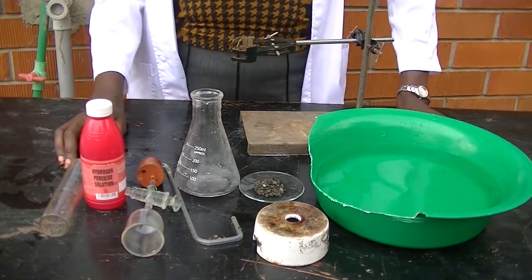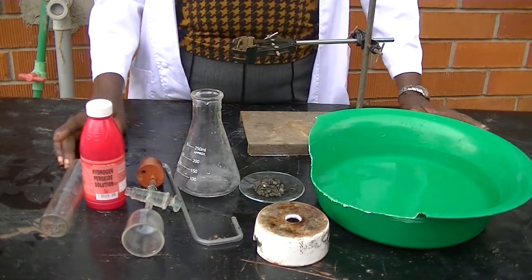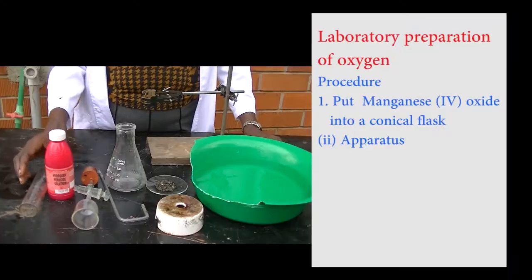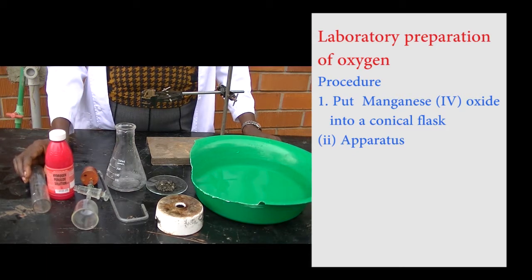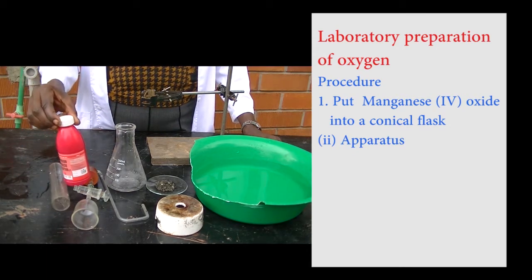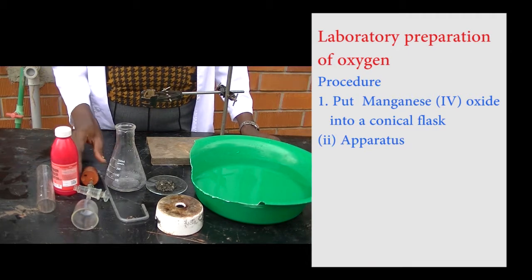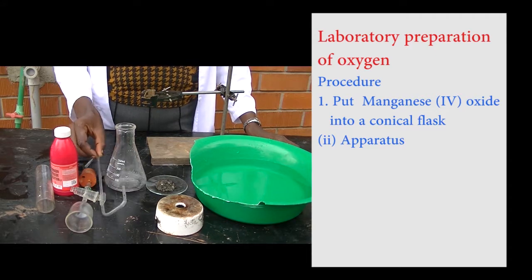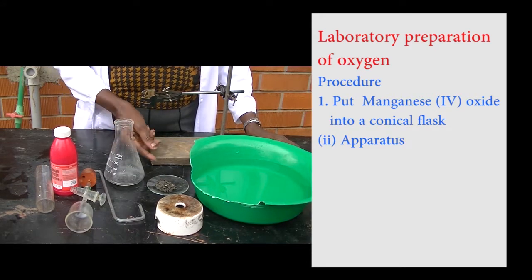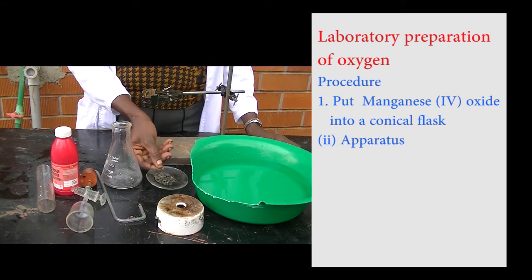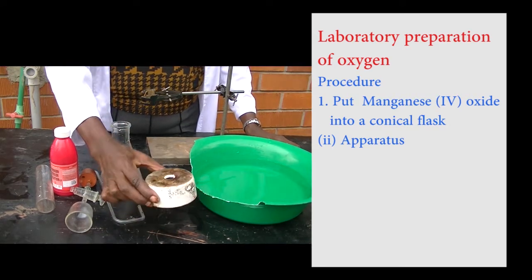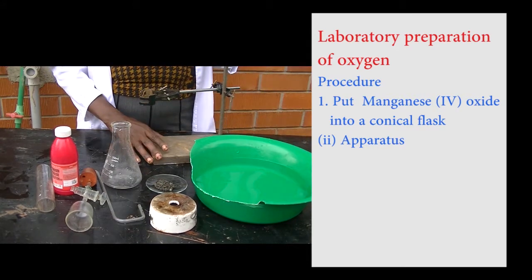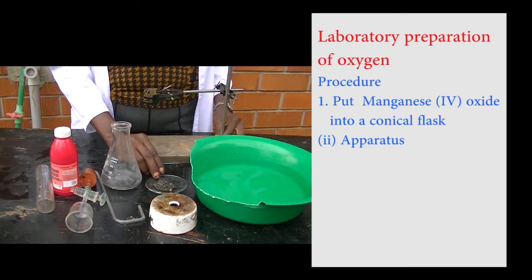In the laboratory preparation of oxygen we involve only two stages: the production stage and the collection stage. So here we need a gas jar which will be used to collect the gas. We have hydrogen peroxide which is one of the reactants, a separating funnel, a delivery tube, a conical flask, manganese dioxide, a beehive which holds the gas jar, a trough with water, and then a stand.